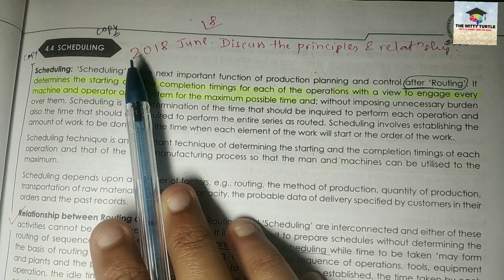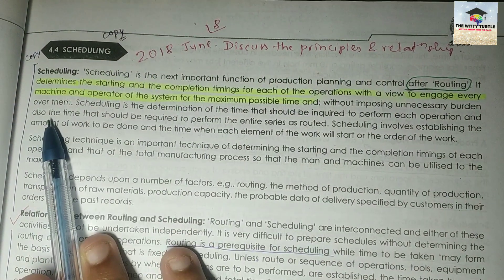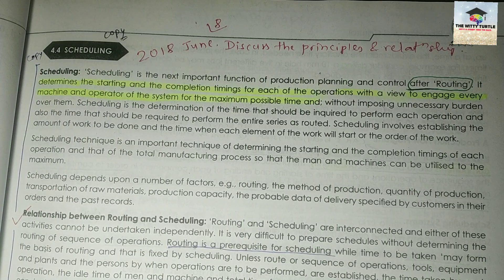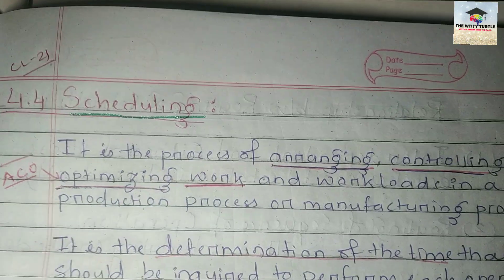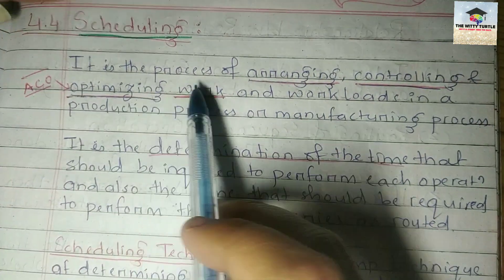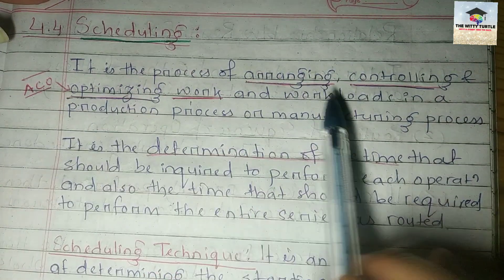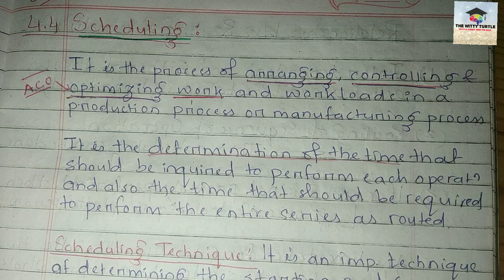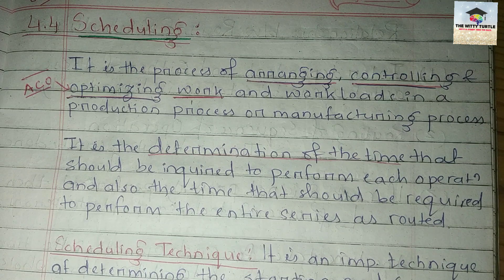As you can already see, in June 2018 this question had been there in the examination: discuss the principles and relationship of scheduling. I have made a note and we will study from that. What is scheduling? Basically, scheduling is the process of arranging, controlling, and optimizing work and workloads in a production or manufacturing process. Imagine a factory where a continuous production process is going on — there are a set of operations or functions that have to be done.